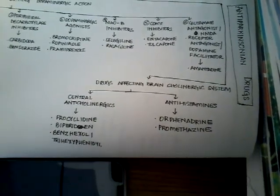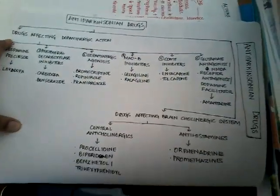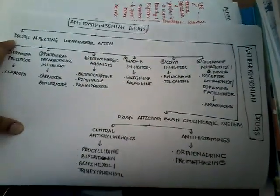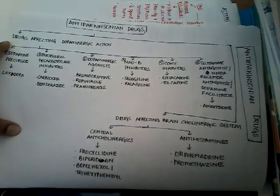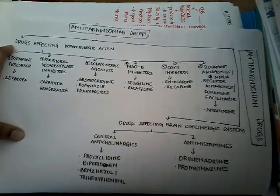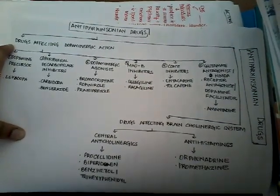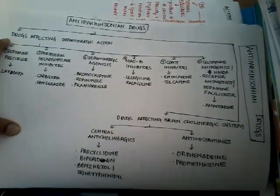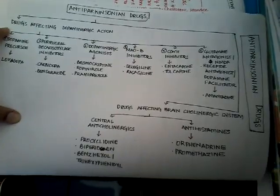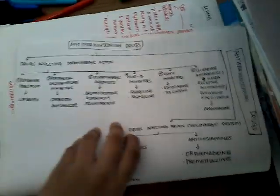For Parkinson's disease or idiopathic Parkinsonism, we give drugs affecting dopaminergic action most commonly. Sometimes we also give the cholinergic drugs, but let us learn about each drug clearly and separately.